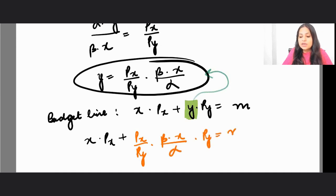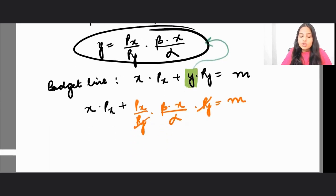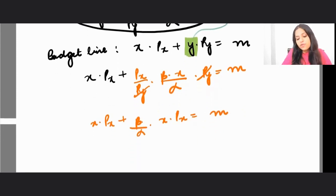py and py will get cancelled off, so you would be left up with x px plus beta by alpha x px equals m. And if you solve for this, you will get x star is equal to m times alpha upon px times alpha plus beta.